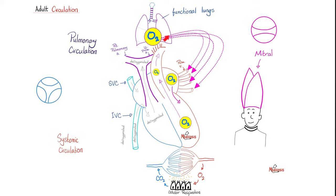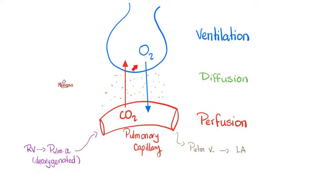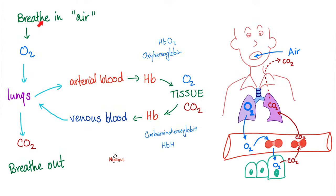This oxygenated blood will come back to the left side of the heart and you continue the cycle. This is what's happening in the alveolus of the lung — oxygen is being inhaled and carbon dioxide is exhaled. This oxygen first enters the blood and then will jump on the hemoglobin as carbon dioxide is being kicked off. You breathe air in — here is your oxygen in your lung — and then oxygen goes to the arterial blood.